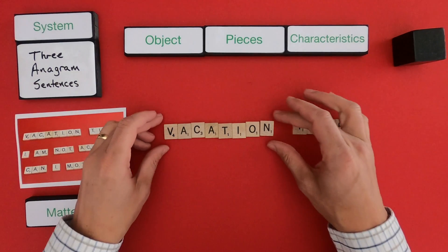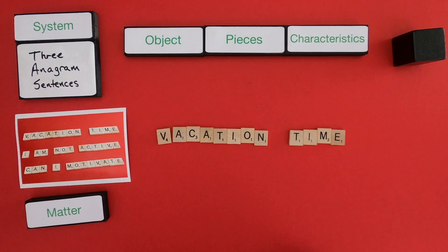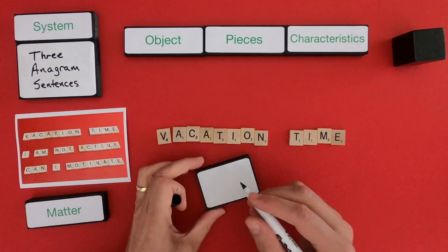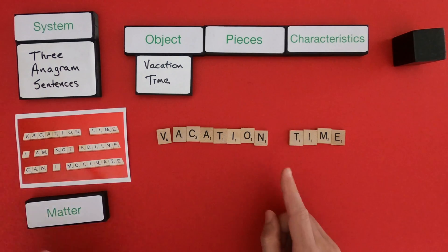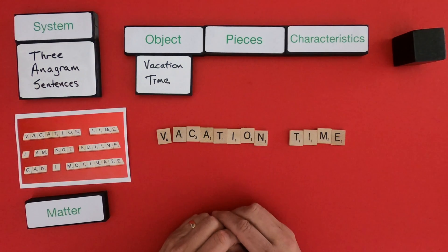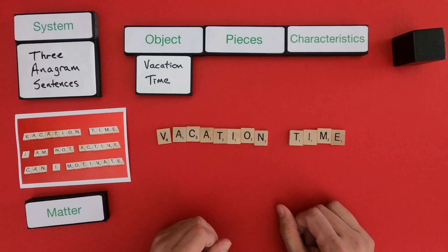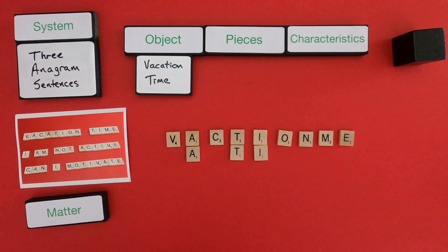Okay, so the first thing I do is go through this first object, which is going to be vacation time. So let me define the object. So the object is vacation time. The next thing I want to do is I want to determine what are all the pieces that make up that phrase vacation time. So let me organize this.